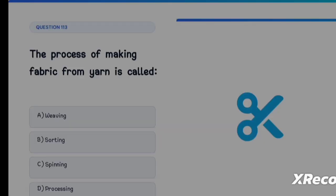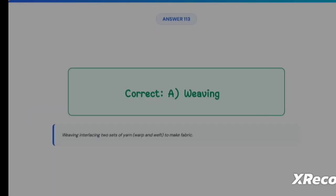Next question: the process of making fabric from yarn is called Option A: Weaving, Option B: Sorting, Option C: Spinning, Option D: Processing. The correct answer is Option A, Weaving.